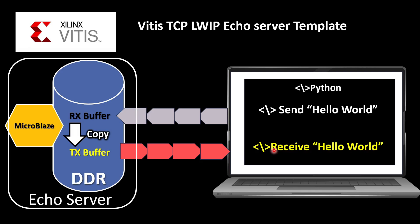Let's review the scenario again. The host machine will send some information — for example the string 'Hello World' — to the echo server. The server will receive it, write it into the RX buffer, then copy it to the TX buffer, and send it back to the client. The client will then receive the exact same data. That's how the echo server works.